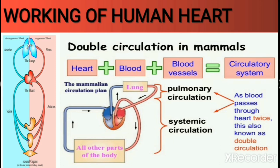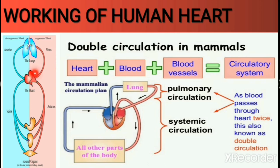Let us understand double circulation in detail. First, impure blood — meaning blood rich in carbon dioxide — enters the right auricle. It arrives from the superior and inferior vena cava, the inferior bringing blood from the lower body and the superior from the upper body. Then from the right auricle, through the pulmonary artery, blood goes to the lungs for purification, where exchange of gases occurs — carbon dioxide is released and oxygen is added, making the blood oxygenated.